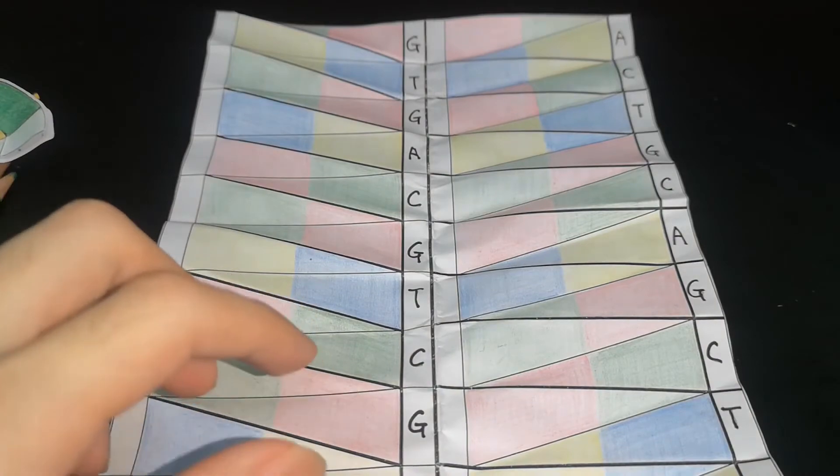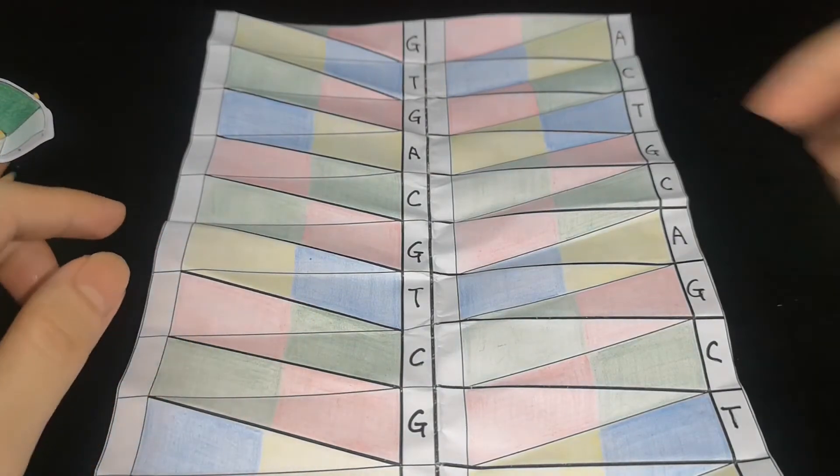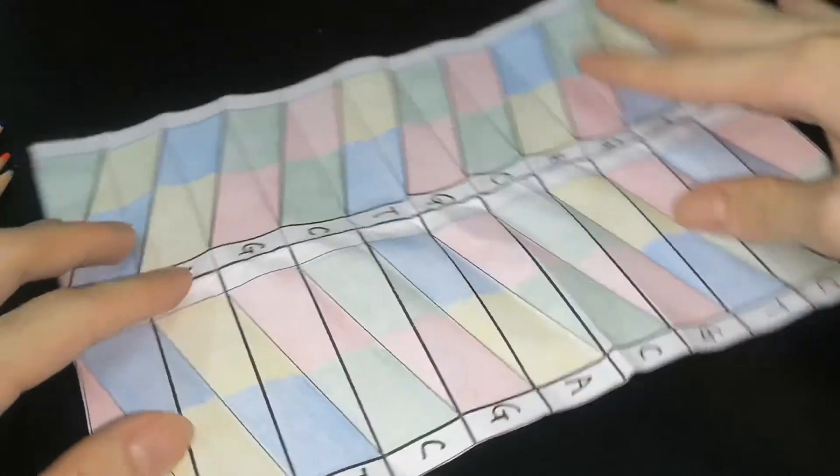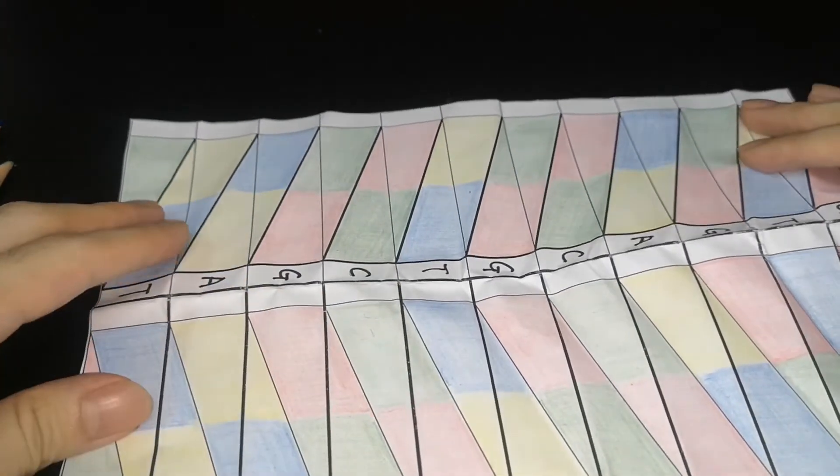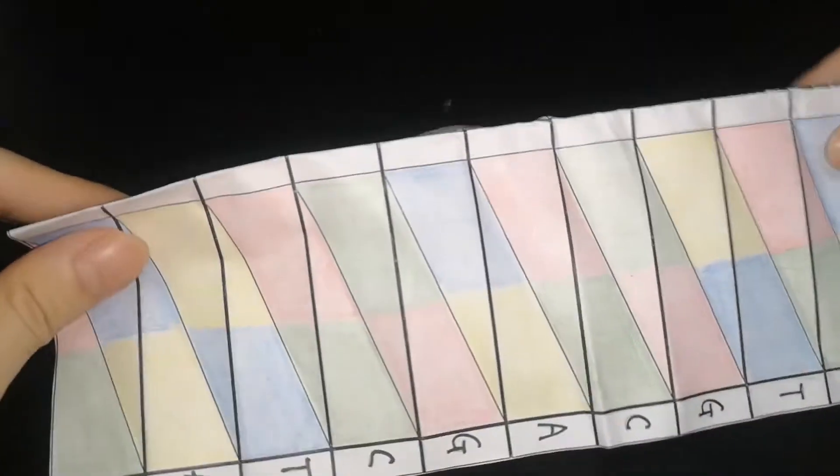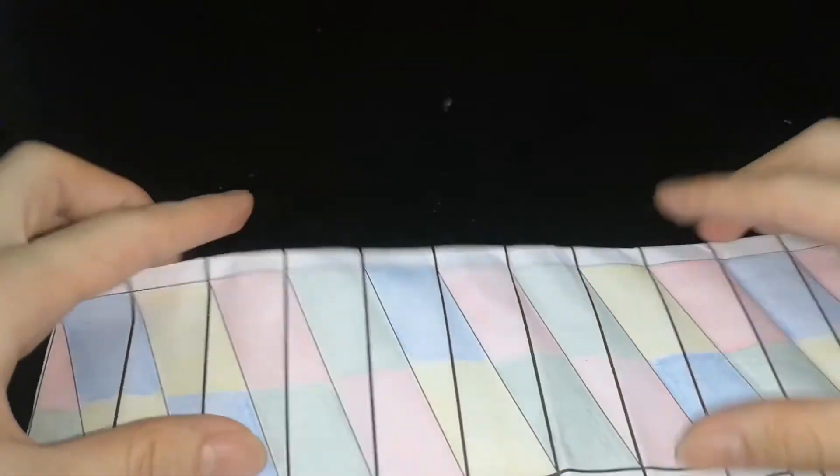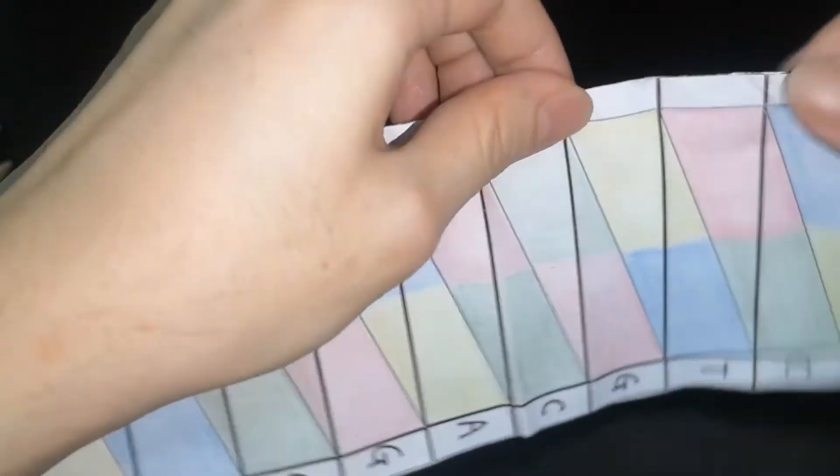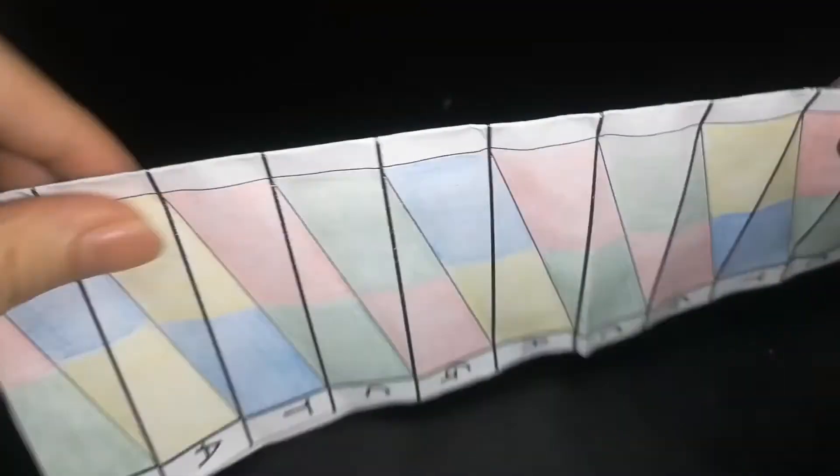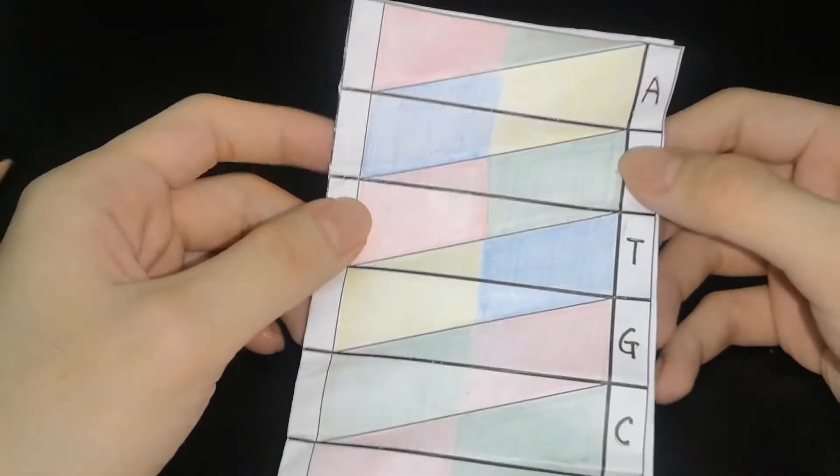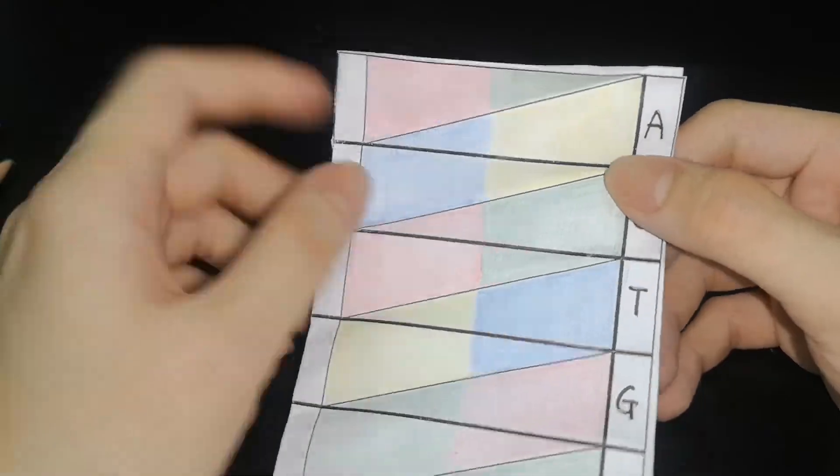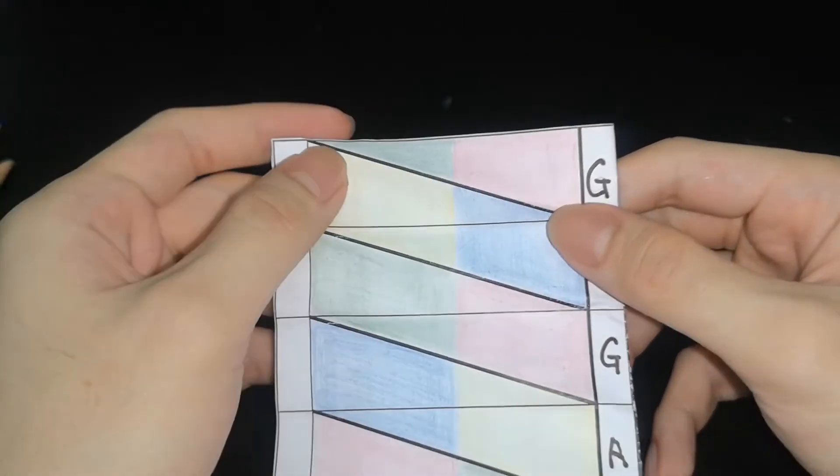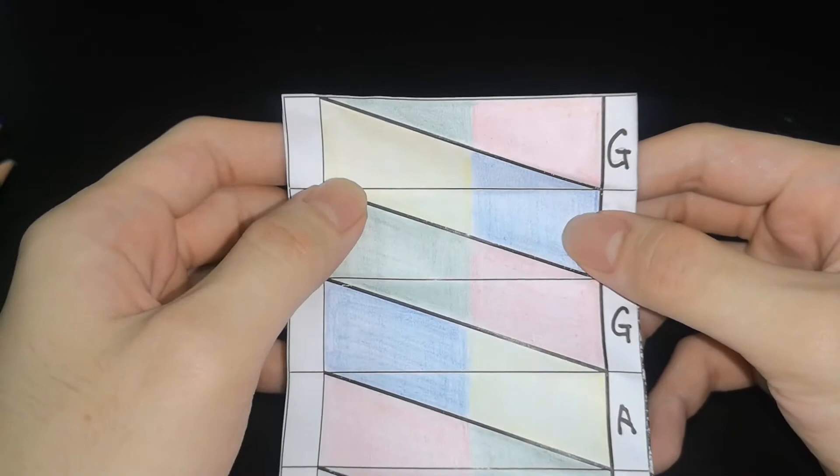Then we are ready to fold our DNA structure. Firstly, fold the template in half. Press down the crease to make sure they are firm. Then fold the paper so that the thick lines are diagonal and the thin lines are horizontal.